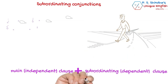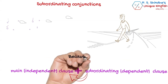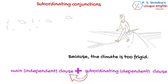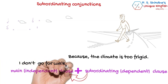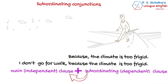The words or phrases that introduce dependent clauses are subordinating conjunctions. For example: 'Because the climate is too frigid' — this clause doesn't make complete sense on its own. But if I say 'I don't go for a walk because the climate is too frigid,' it makes a complete sentence. Here, 'because' is the subordinating conjunction.